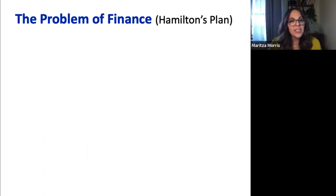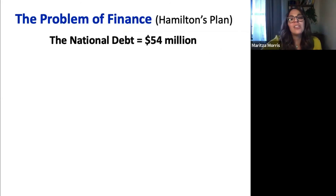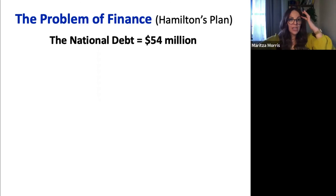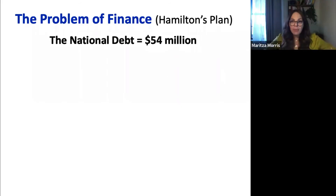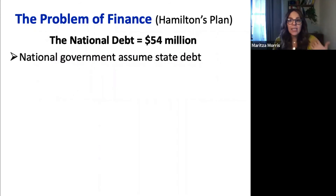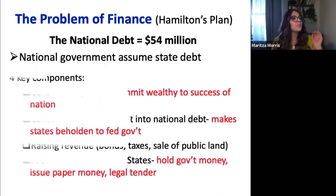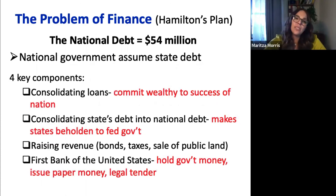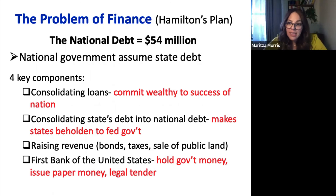Let's talk about the problem of finance — Alexander Hamilton's financial plan. The national debt was at a crushing 54 million dollars, the Revolutionary War debt. Hamilton hoped to pay off all foreign debt and have the national government assume the states' debt. There are four key components to his financial plan: first, consolidating loans, which essentially commits wealthy Americans to the success of the nation; second, consolidating state debt into the national debt to make the states beholden to the federal government.